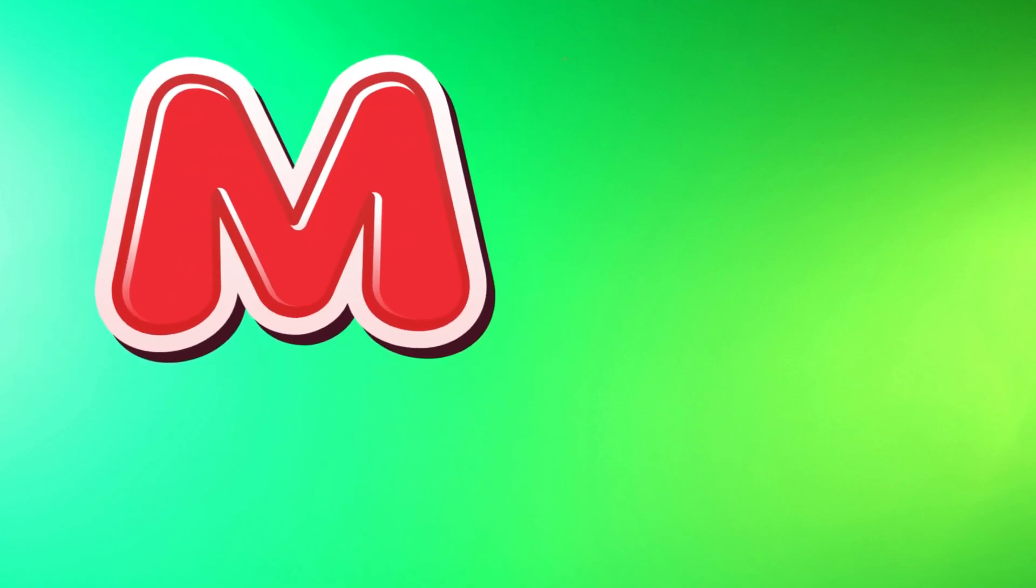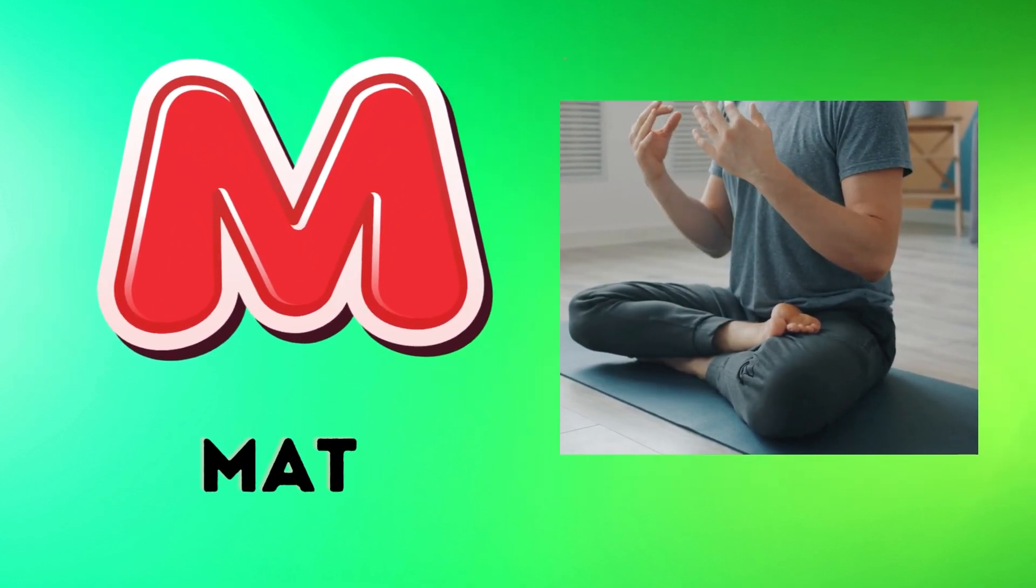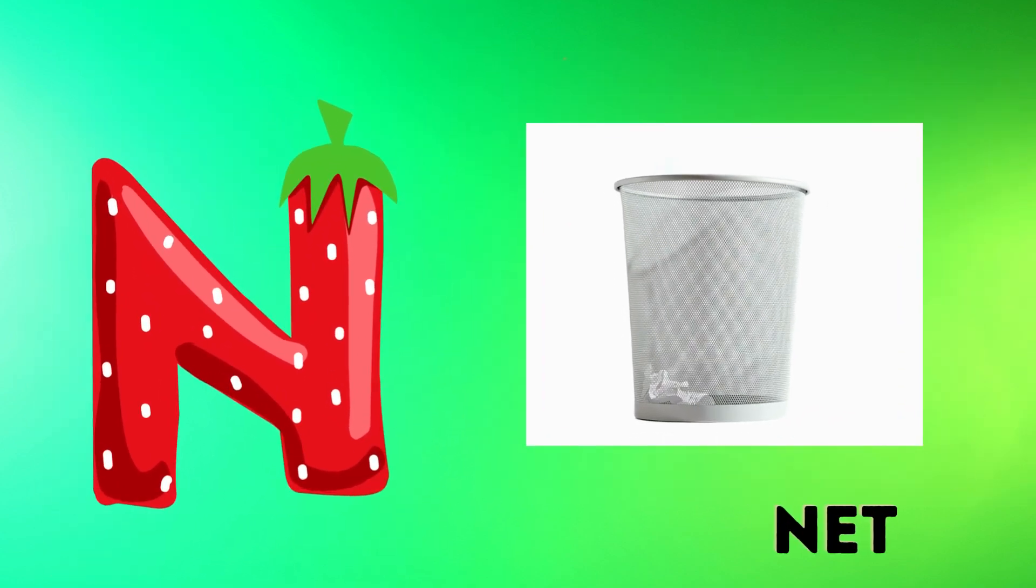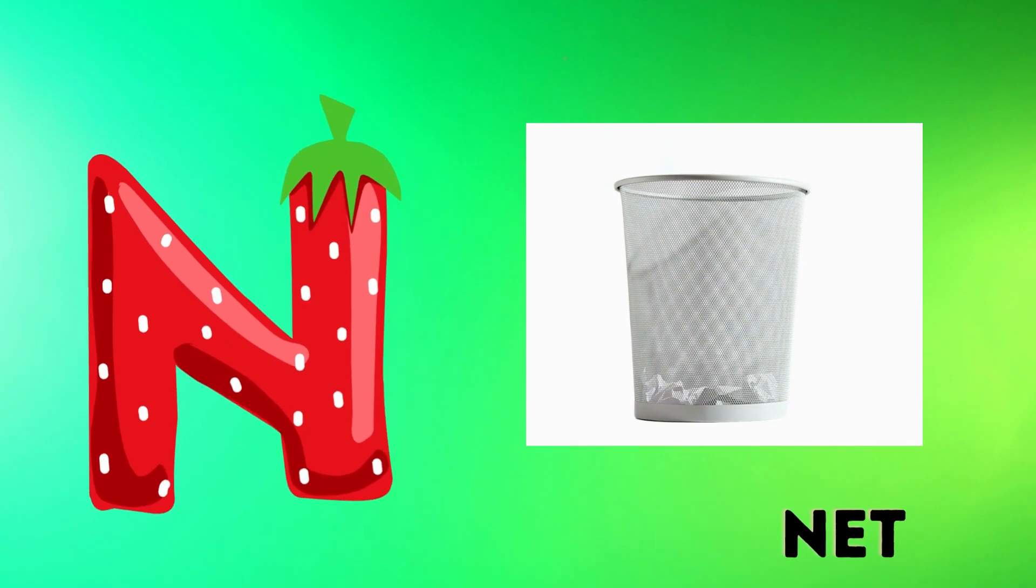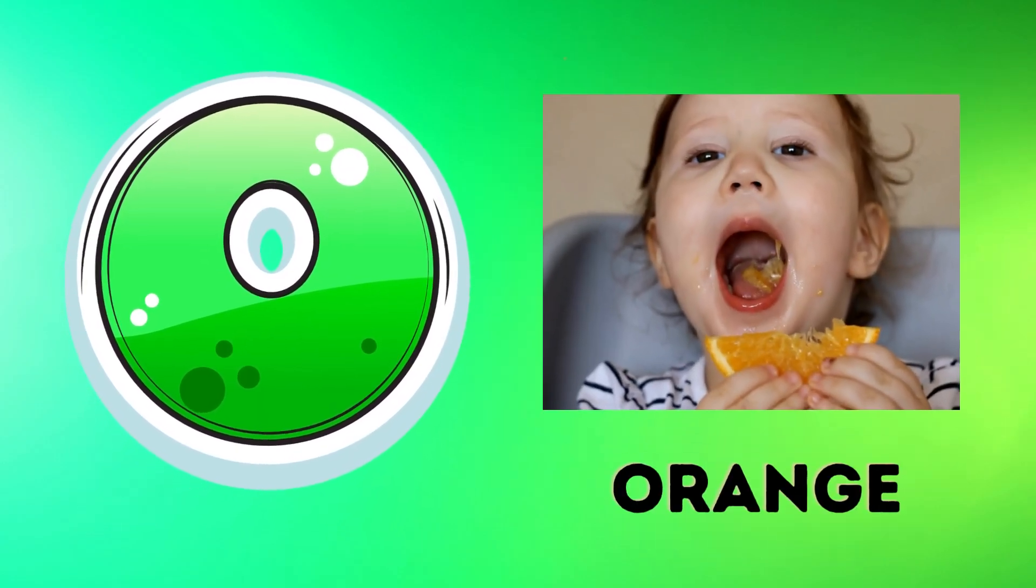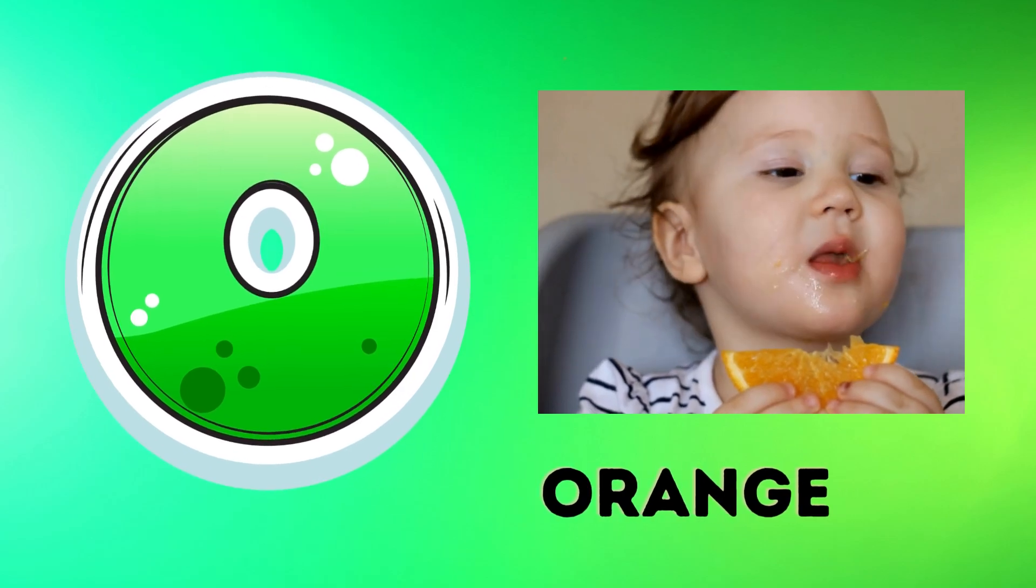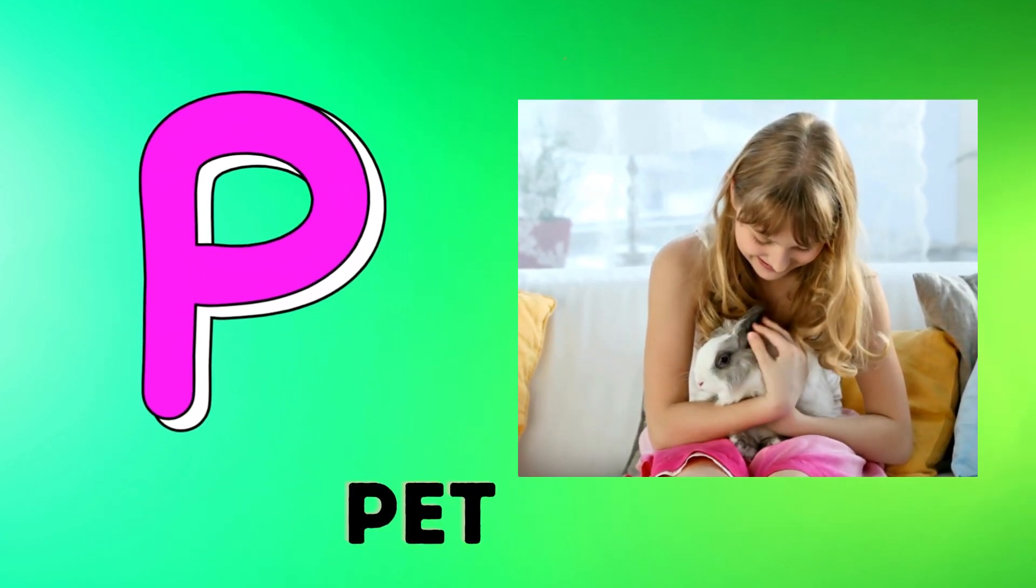M is for mat, m-m-mat. N is for net, n-n-net. O is for orange, o-o-orange. P is for pet, p-p-pet.